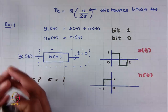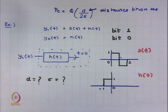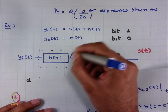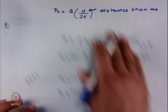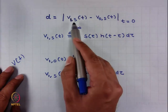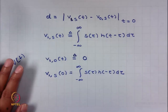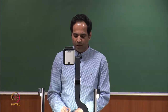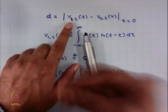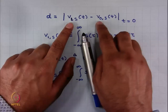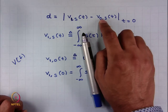We are trying to understand clearly what d and σ are — not trying to learn them by heart. Let v(t) be the output of this filter. We define v₁ₛ(t) as the output when bit 1 is transmitted, considering only the signal component. This simply denotes the signal content at the output of the filter given that bit 1 is transmitted, minus the signal content given that bit 0 is transmitted.